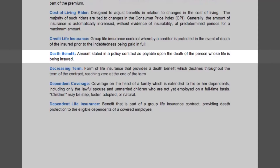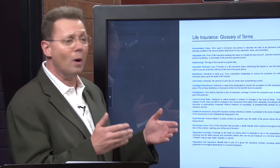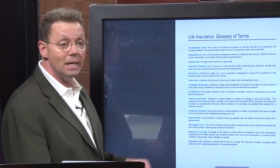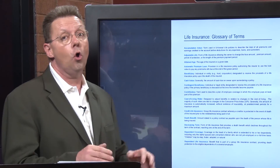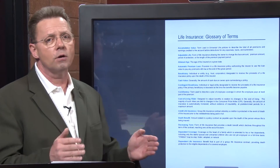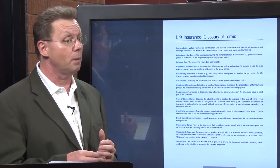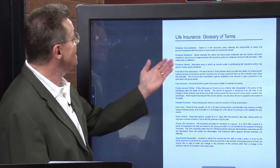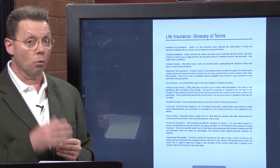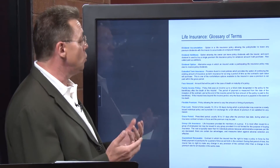'Death benefit amount' — the amount stated in the policy contract as payable upon death of the person whose life is being insured. Later this week we're going to figure out and do some calculations on how much insurance you need. 'Dependent coverage' — you could put your wife or children on as dependent coverage using certain riders. We're going to spend a whole week covering every rider we can talk about. 'Dividend options' — if you're buying a participating whole life contract, you can choose what to do with your dividends; there's a plethora of ways to use them.